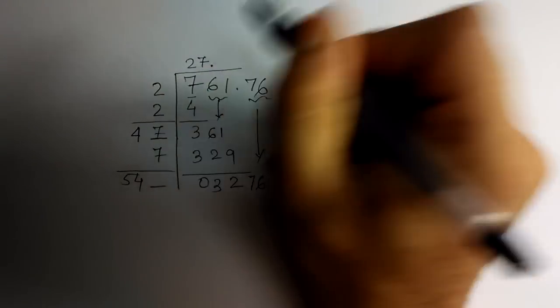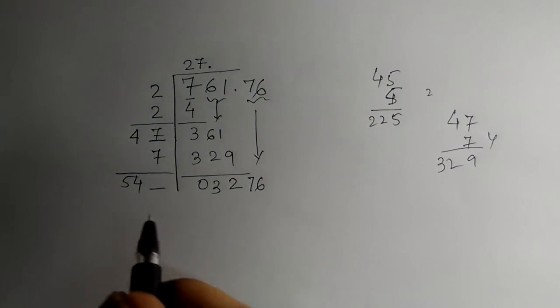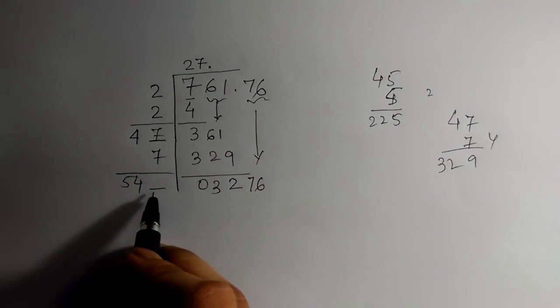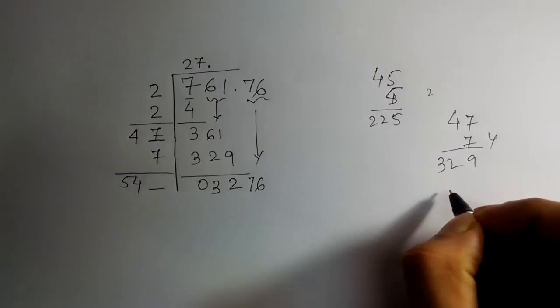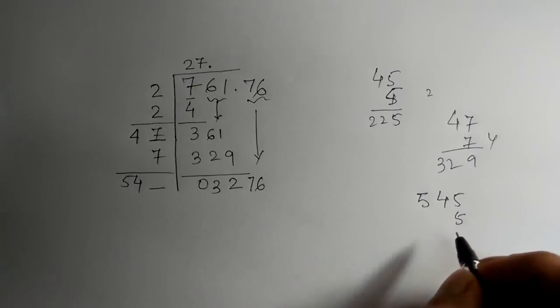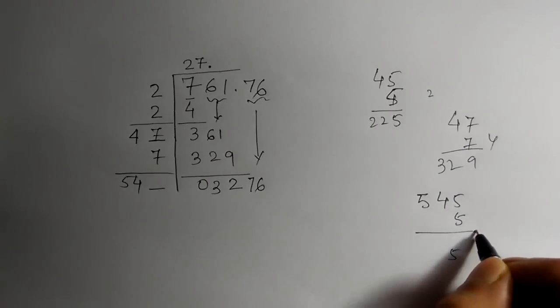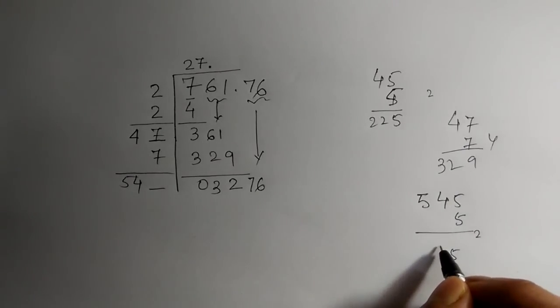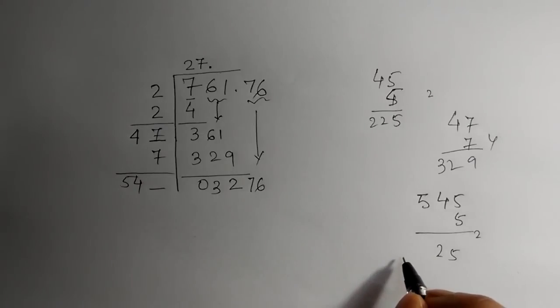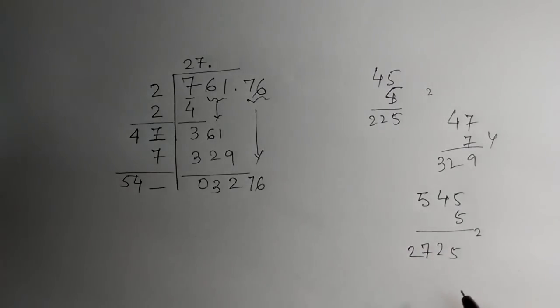Now as we noted down the digits after decimal, so we will put here decimal. Now we have to look forward to fill this blank. Let us say we take 5, 545 times 5 is 2725, it is less than 3276.